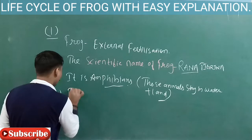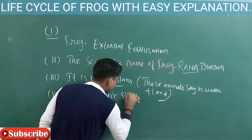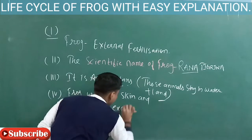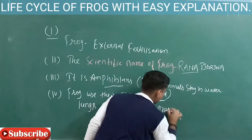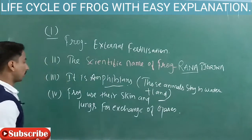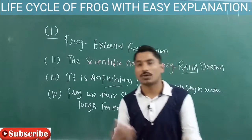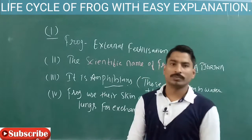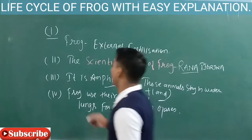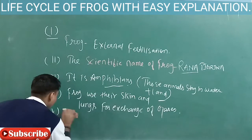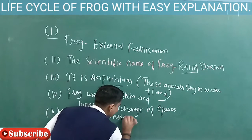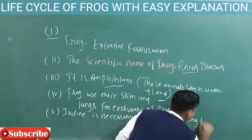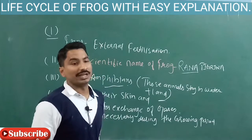The fourth point is that frog uses their skin and lungs for exchange of gases. External fertilization means fertilization which takes place outside the body — in the case of frog, it happens in water. Also, for the larva and tadpole to grow, iodine is necessary. Iodine must be present in water during the growing period.